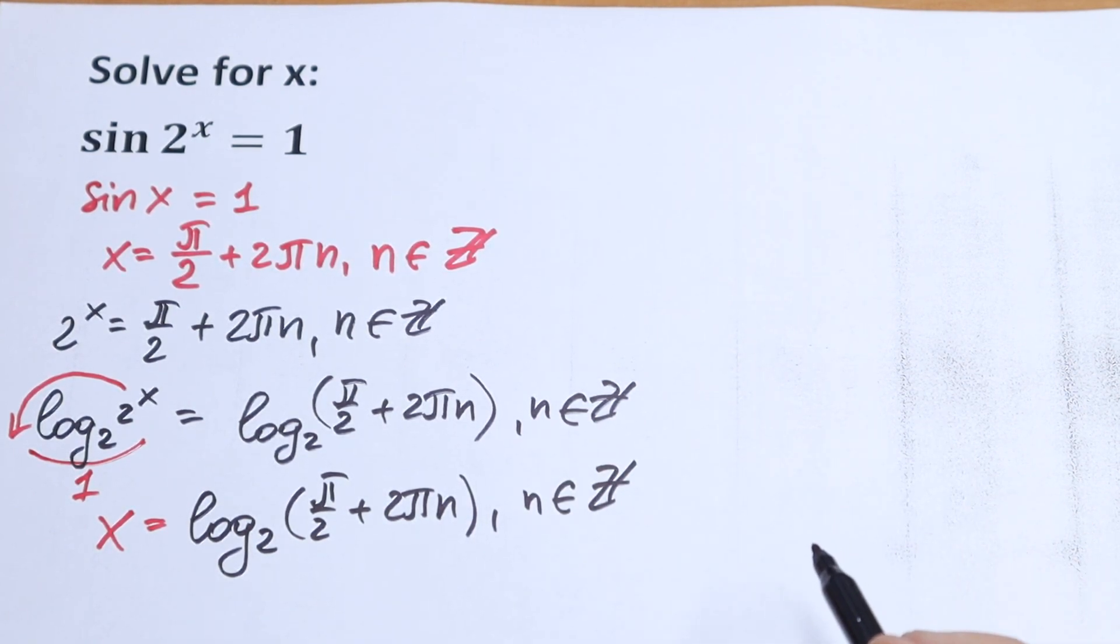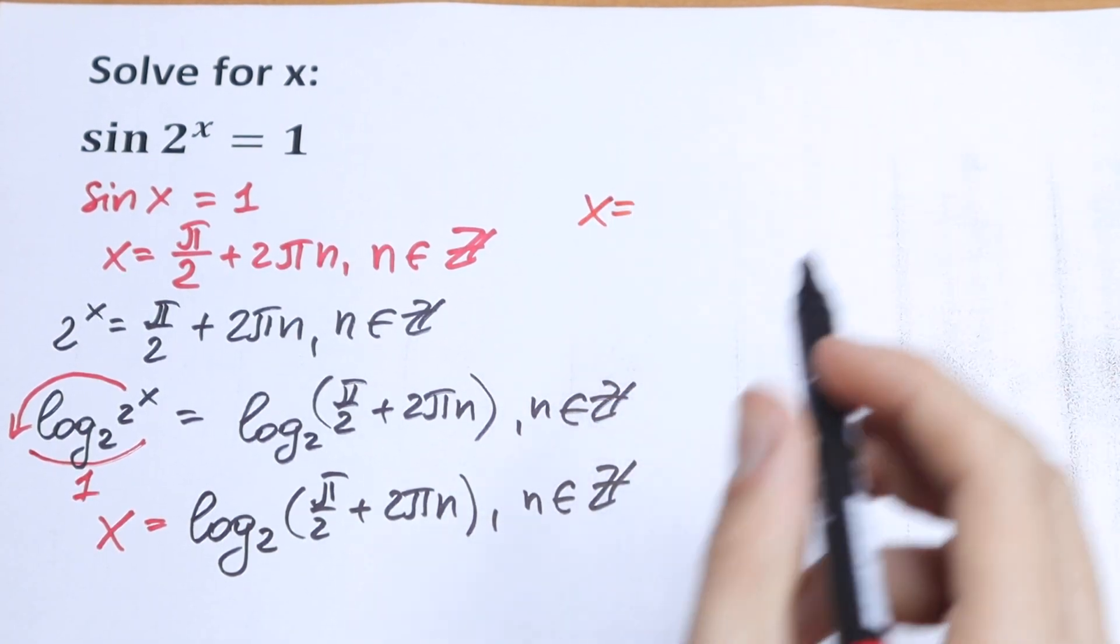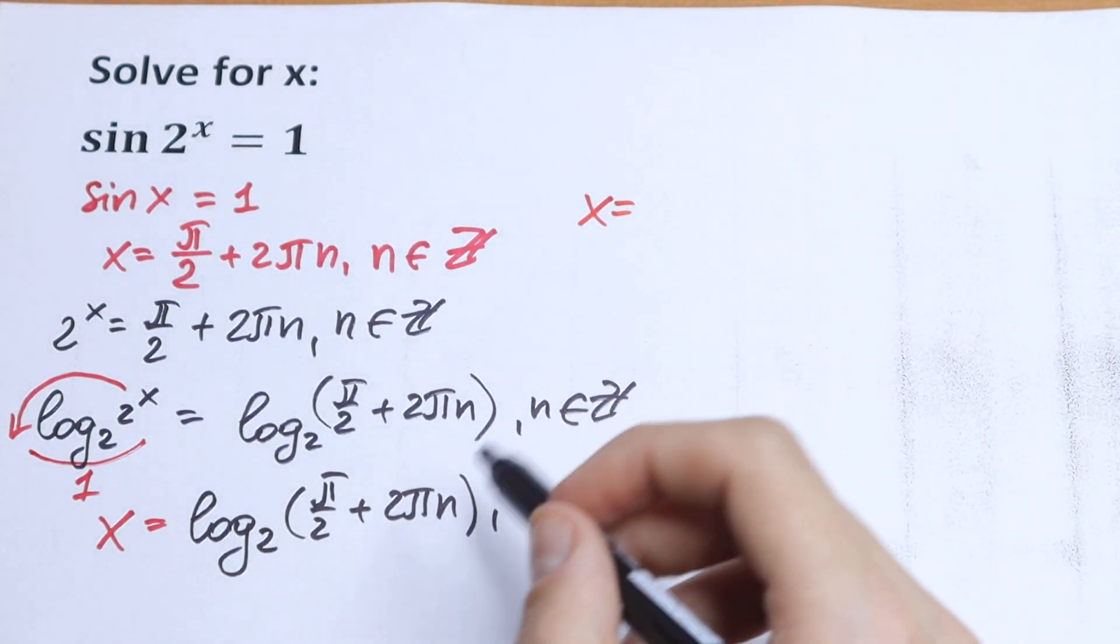And this is our final answer. Of course, we can simplify this a little bit. So our final answer will be x equals... using a log property, a log rule.